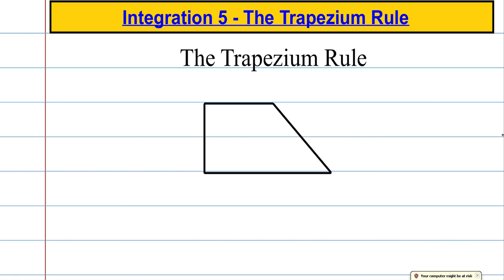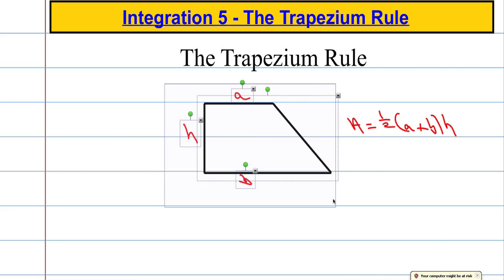You may remember from GCSE how to calculate the area of a trapezium. That's simply found by adding the parallel sides, let's call them A and B, multiplying that by the height H, and then halving the answer. So the area of a trapezium is half the sum of the parallel sides multiplied by the height. We're going to use this concept to help us approximate areas under curves.